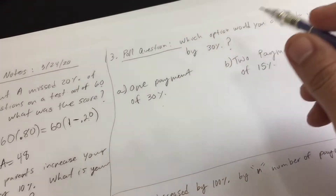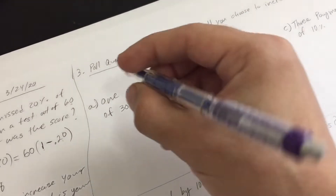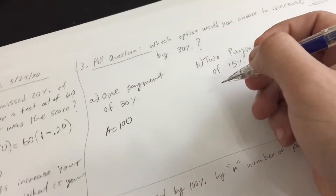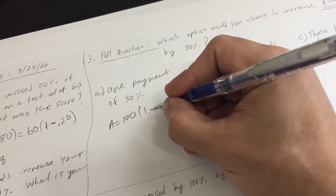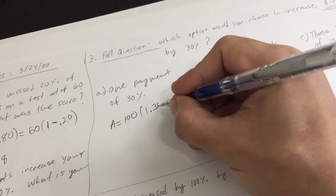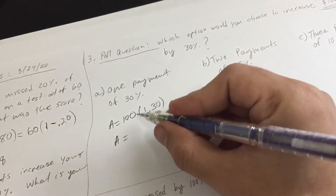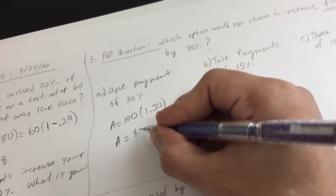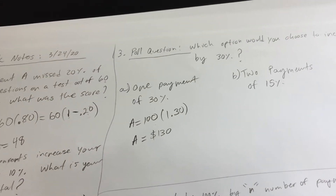We start with $100 as our initial amount and we're increasing by 30%. Just like before, A equals 100 times (1 + 0.30), which is the same as 100 times 1.30. That amount is $130. That's how much you would get if you received your full 30% interest in one single payment.